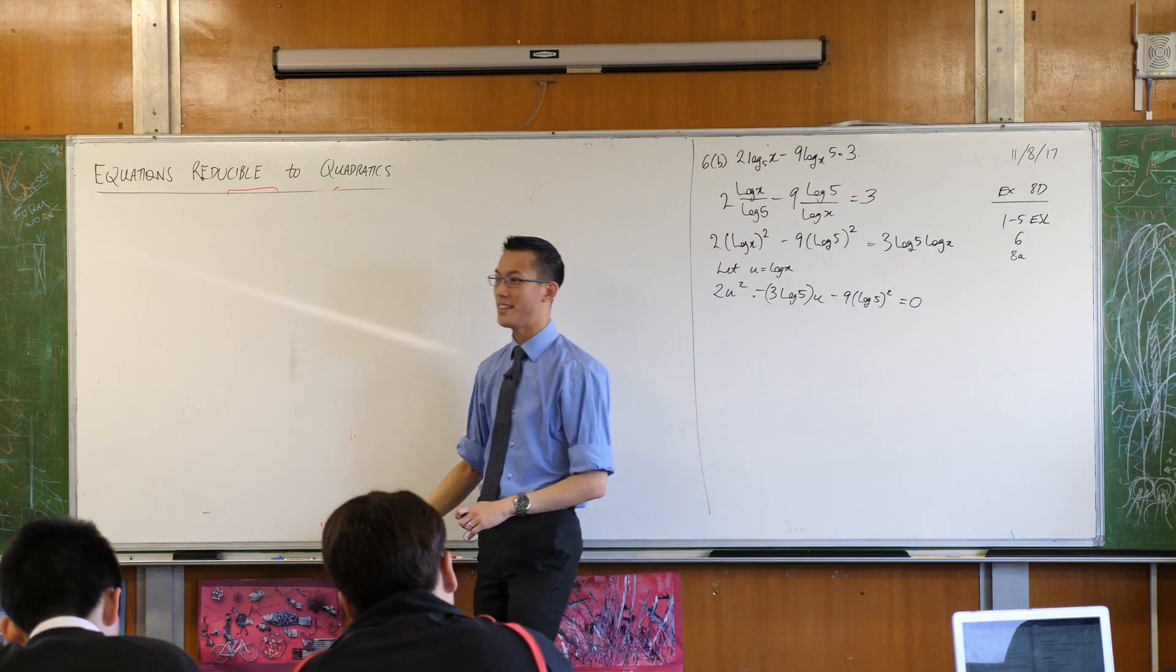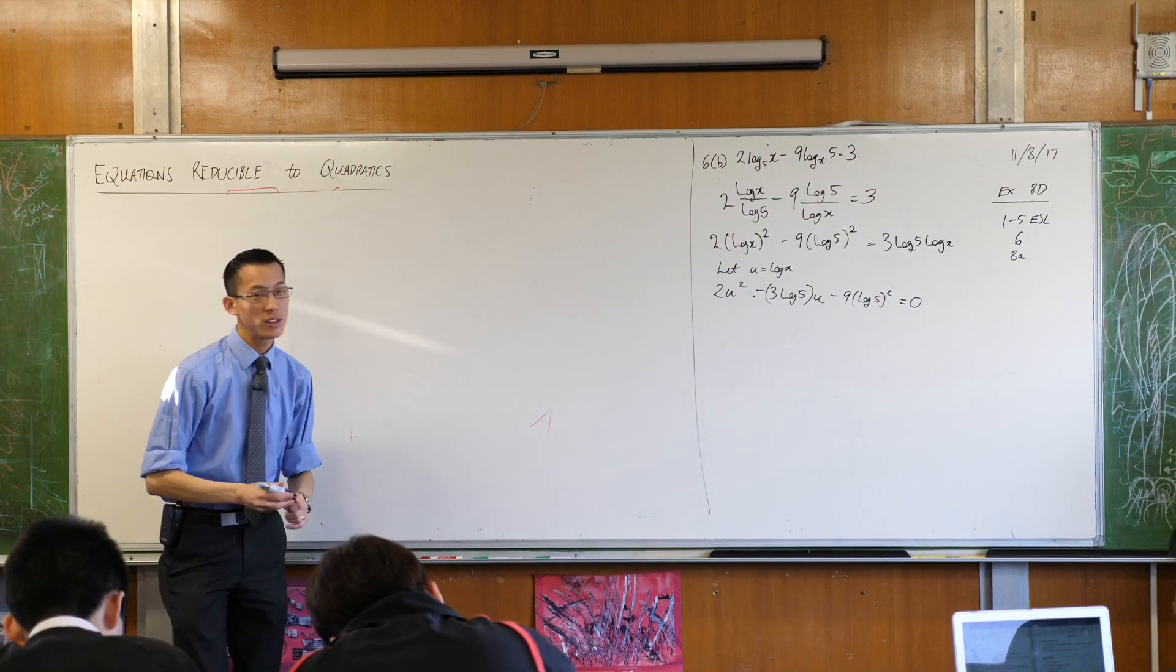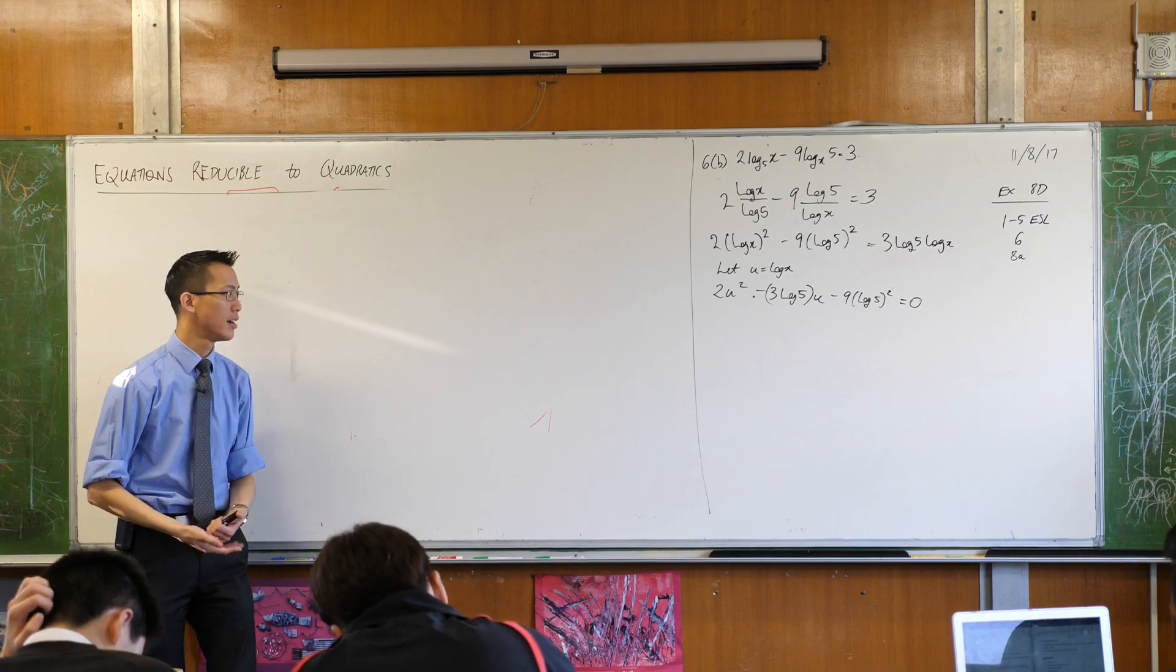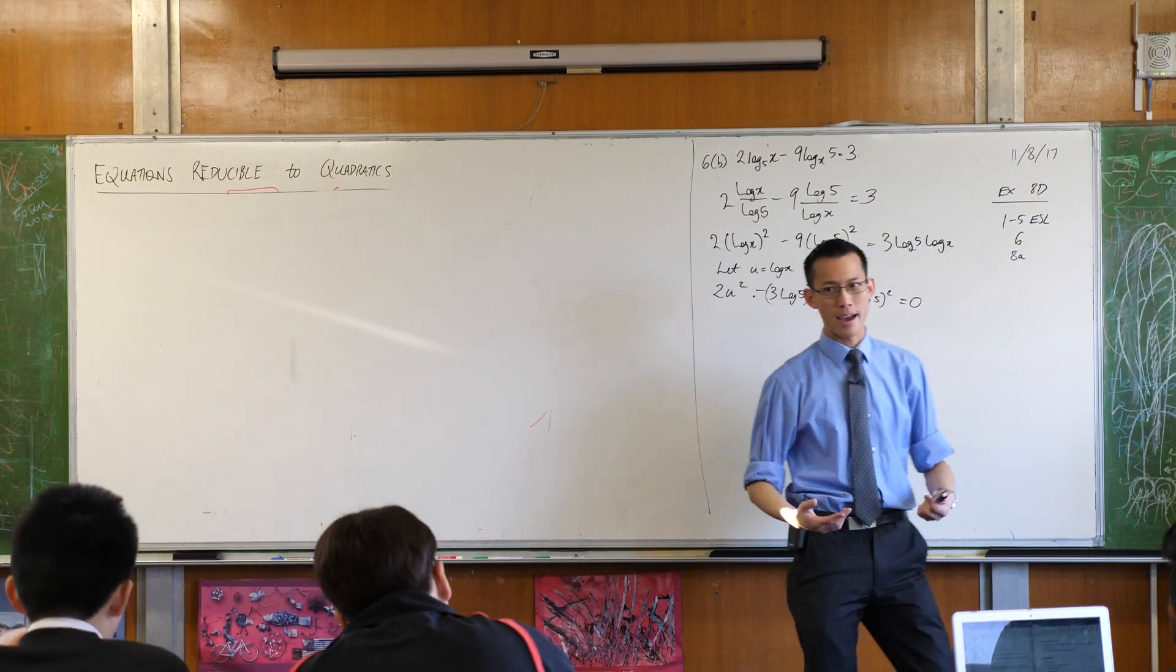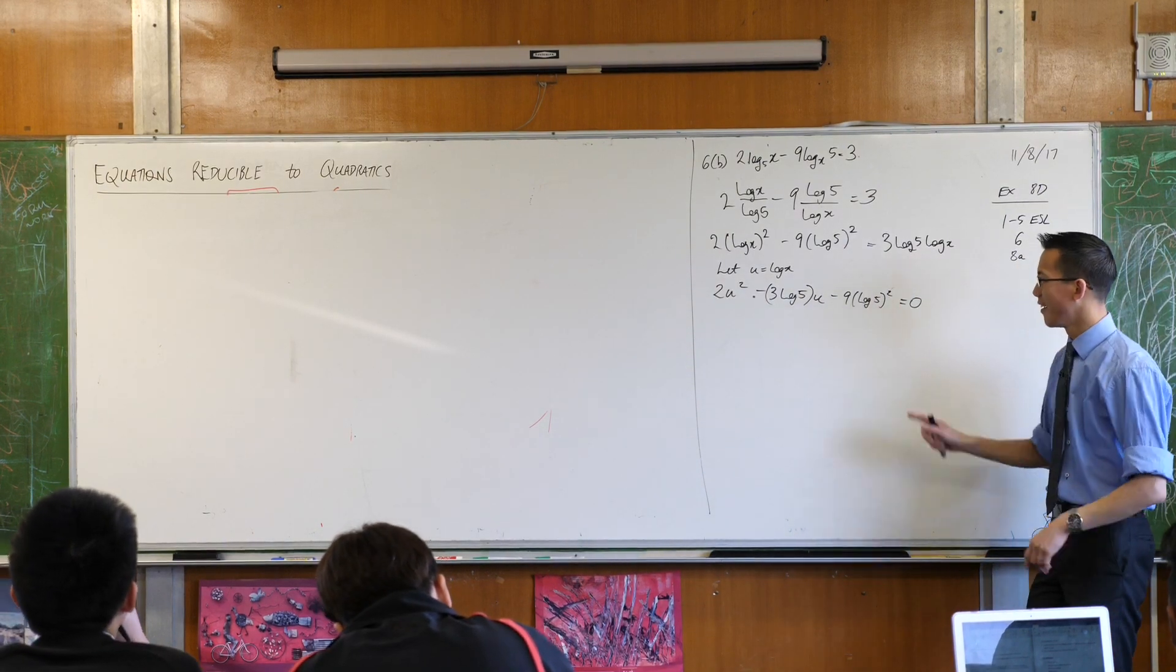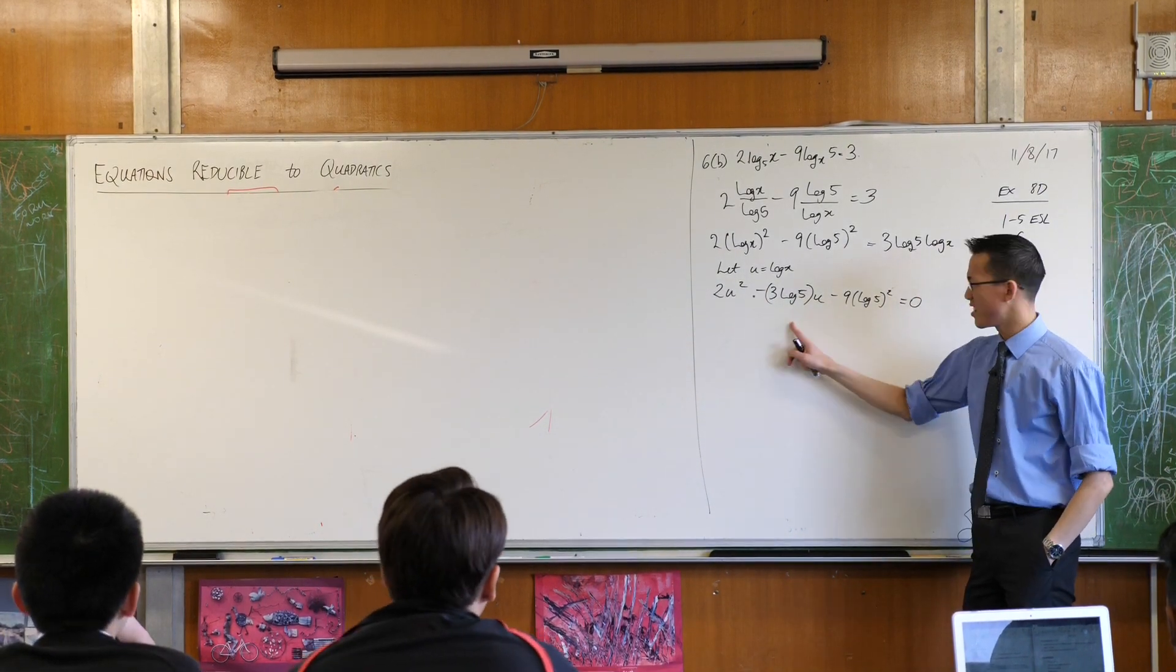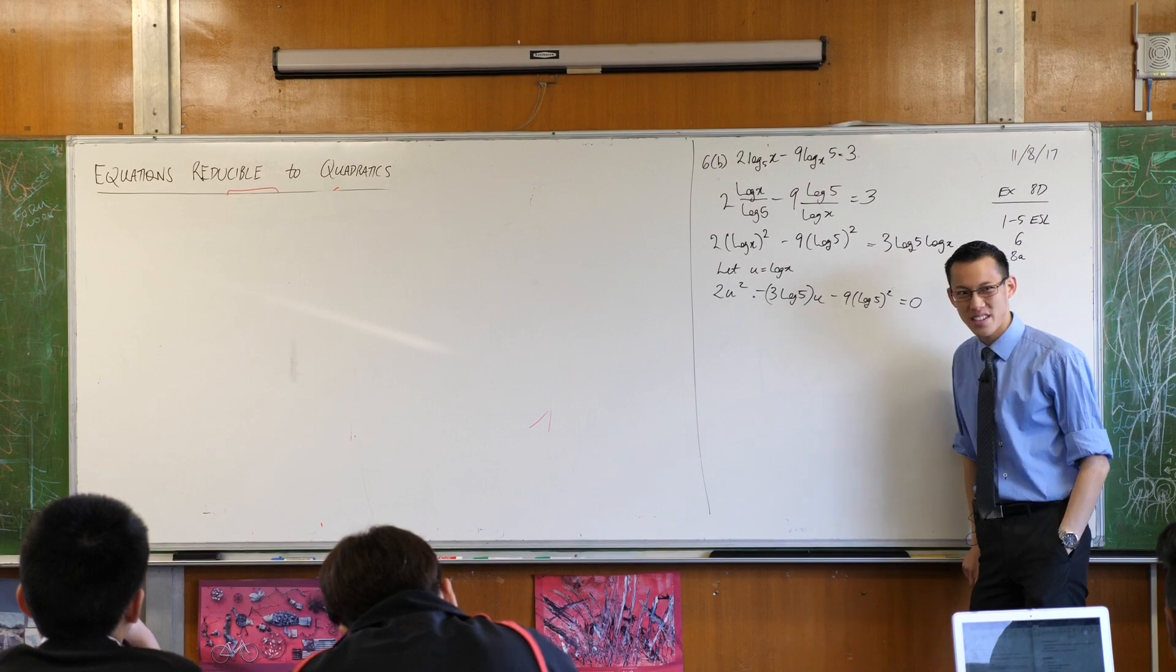Now admittedly this looks messy but remember log 5 is just a number, it's just a number. So I can deal with it like any other number like 3 or 8 or pi or e, it's fine. This is a quadratic, right? Can you see a nice easy factorization for it?